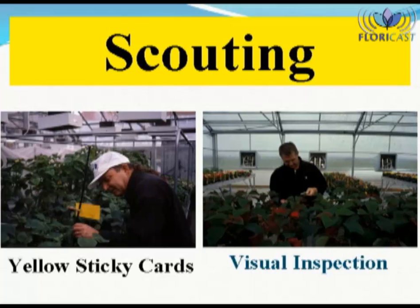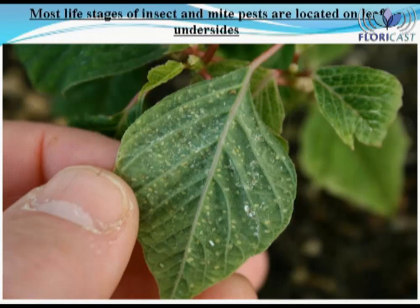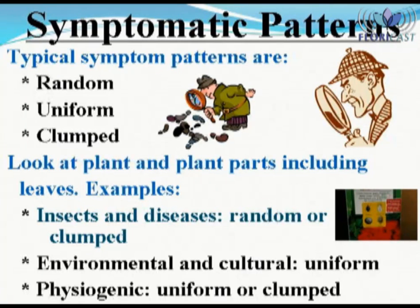Scouting involves the use of yellow sticky cards to capture winged or adult stages of certain insect pests, and visual inspection of individual plants to detect life stages such as eggs, nymphs, larvae, and pupae, and certain insect and mite pests that are not captured on yellow sticky cards. During visual inspections, it is critical to look at leaf undersides because the life stages of most greenhouse insect and mite pests are located on the underside of leaves.